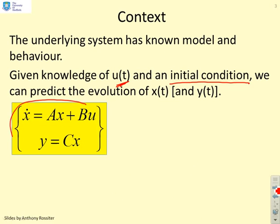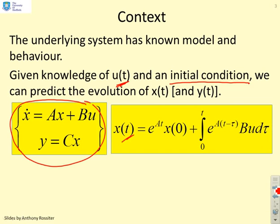Take a model here, x dot equals Ax plus Bu, y equals Cx. Then it was shown that the state evolution is given by a term which depends on the initial condition, e to the At times x of 0, plus a convolution integral which contains the system input u.